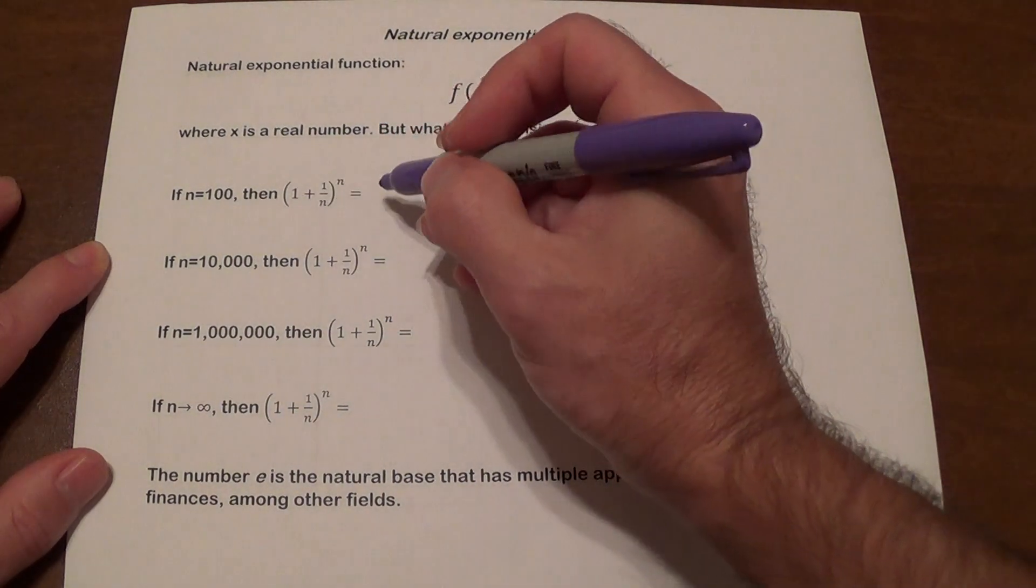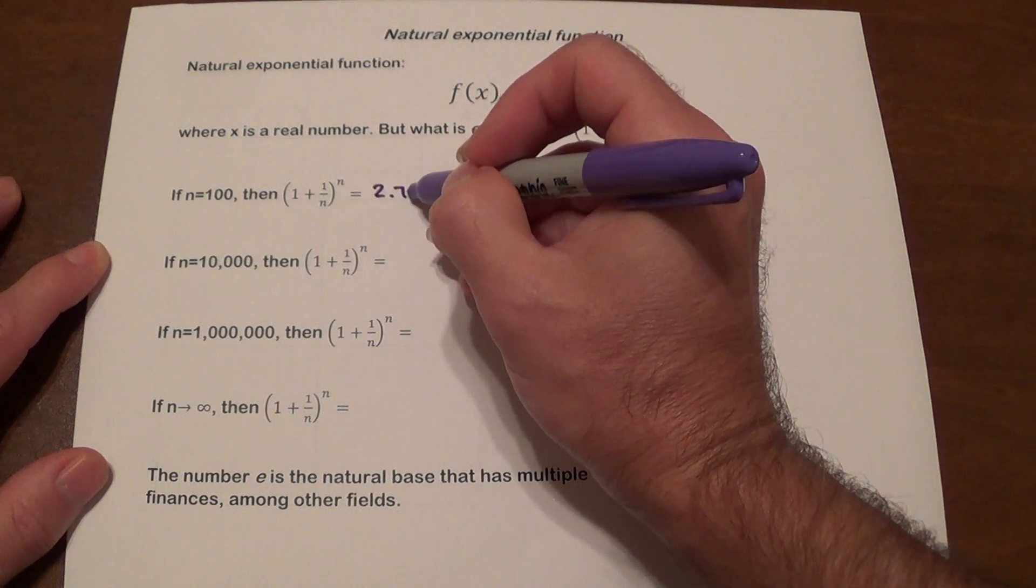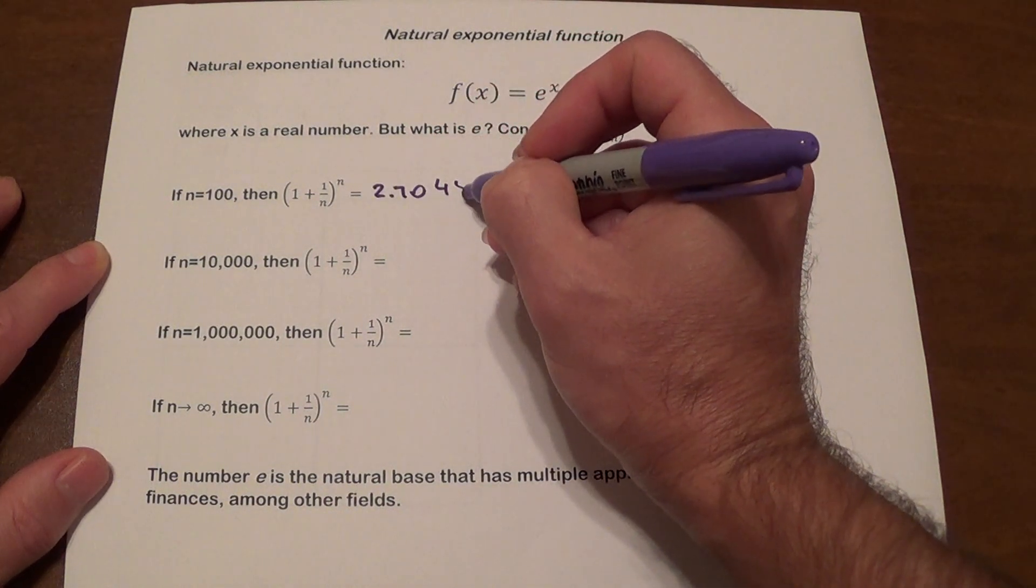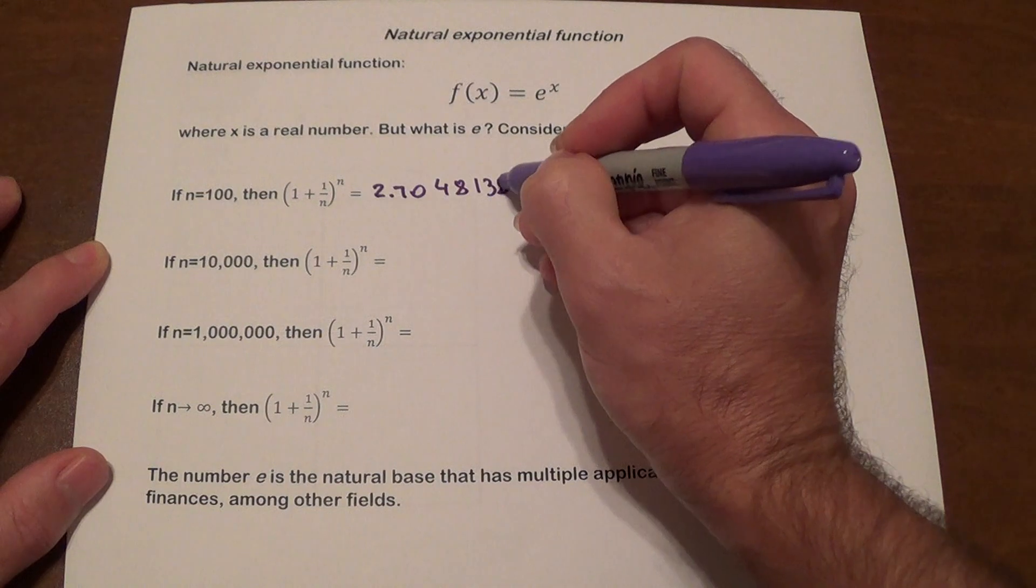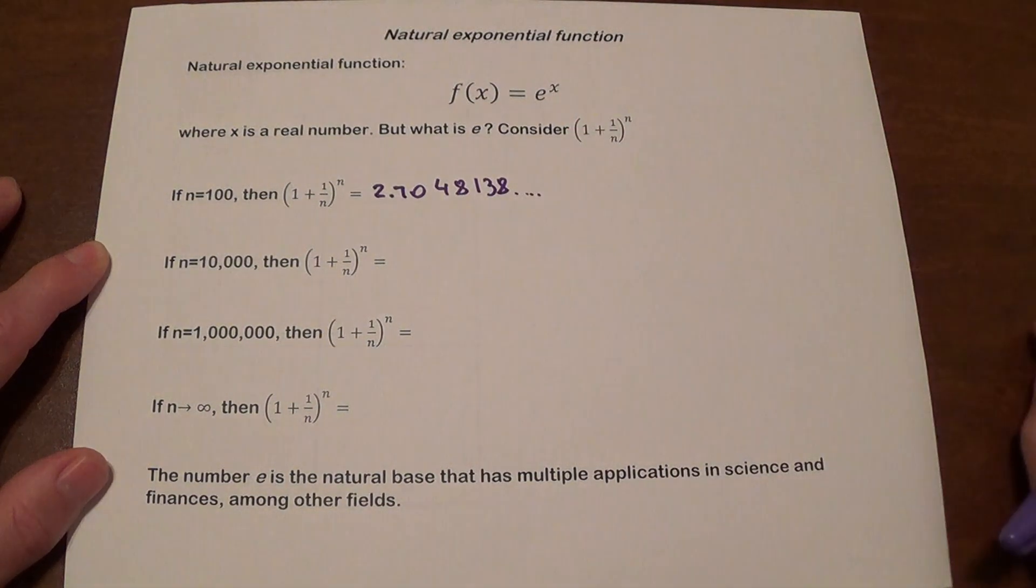When n is a hundred, this number is going to be approximately 2.7048138 and so on. It's an irrational number, it keeps on going.